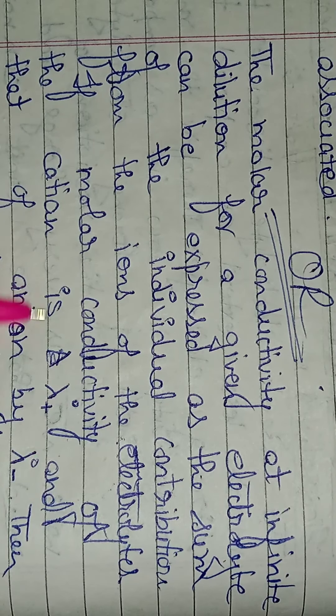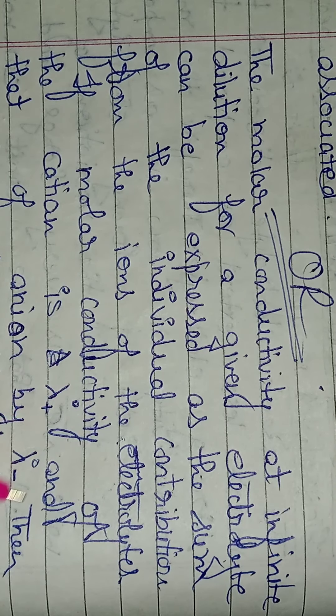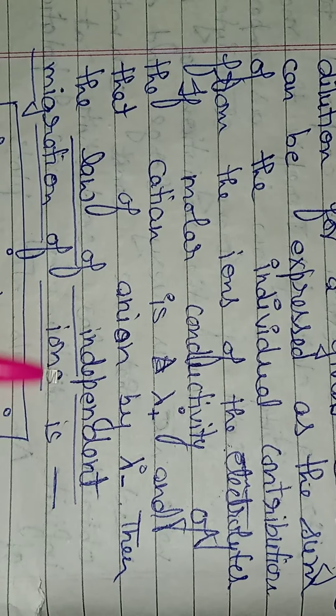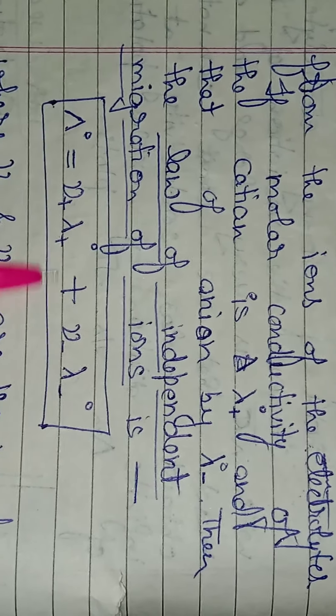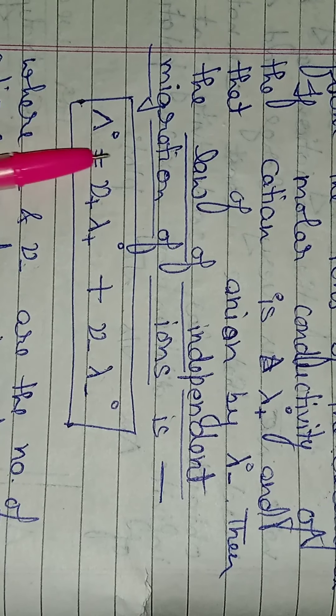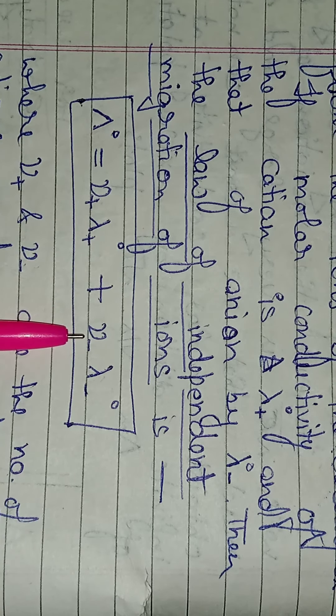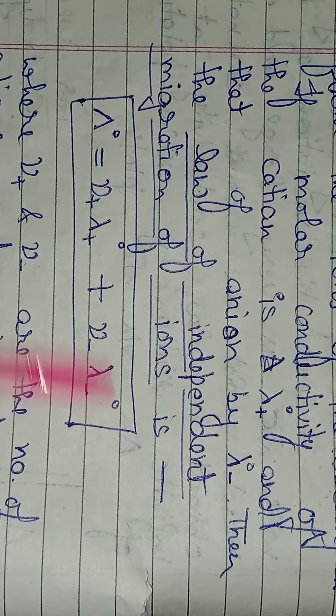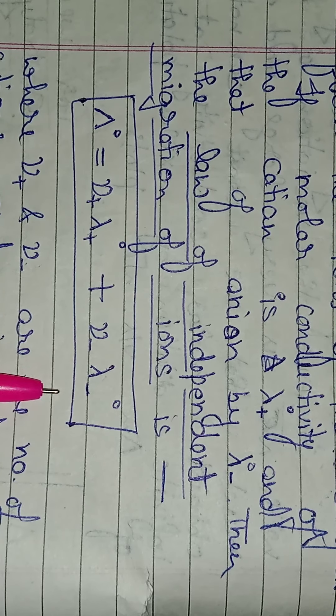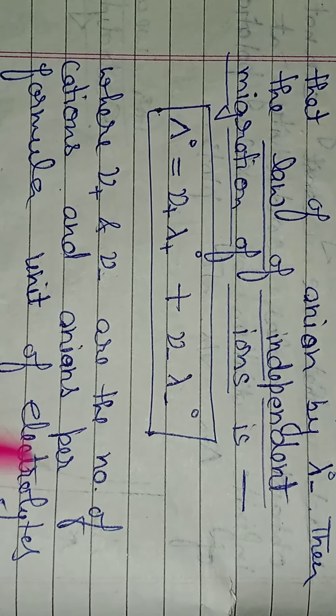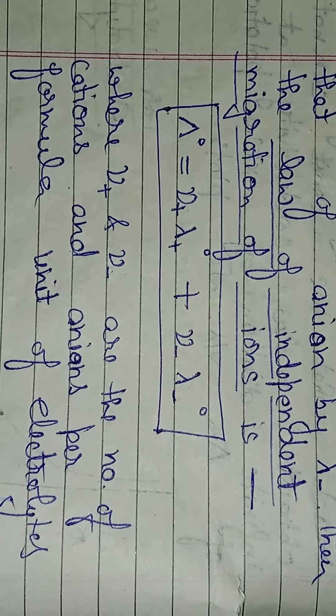If molar conductivity of the cation is lambda plus naught and that of anion is lambda minus naught, then jo law hai independent migration of ions ka, woh kya kahega? Lambda naught equals nu plus lambda plus naught plus nu minus lambda minus naught. Ye cation ka ho gaya, ye anion ka ho gaya. Nu plus nu minus are the number of cations and anions per formula unit of electrolytes.